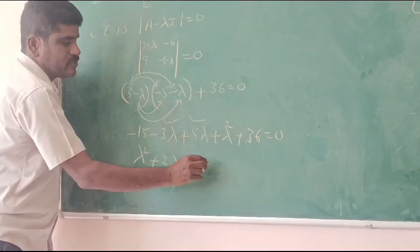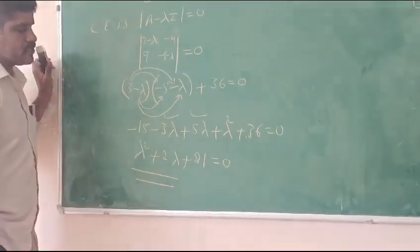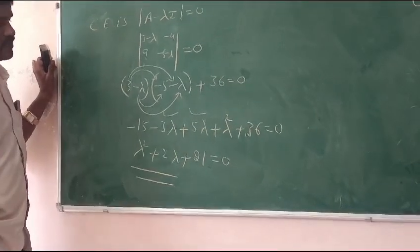Lambda squared plus 2 lambda plus 21 equals 0.